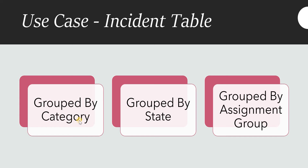For example, if the report is grouped by category and I click on the category called inquiry, it will show me a report which has category of inquiry grouped by state, showing different states like new, closed, or in progress. Then if we click on new state, it will again show a report grouped by assignment group. And if we further click on that assignment group, it should finally show me a list of all the incidents in the list view.